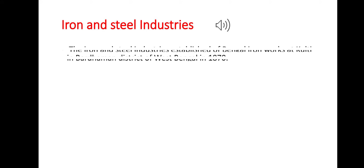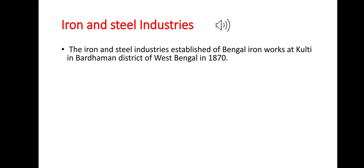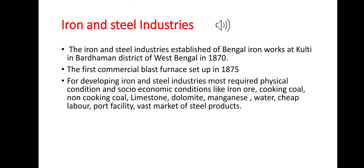The iron and steel industry was established at Bengal Iron Works at Kulti in Bardhaman district of West Bengal in 1870, and the first commercial blast furnace was set up in 1875. For developing the iron and steel industry, the most required physical and socio-economic conditions include: iron ore, coking coal, non-coking coal, limestone, dolomite, manganese, water, cheap labor, port facility, and a ready market for steel products.